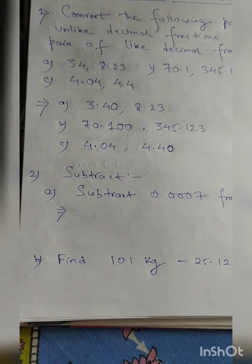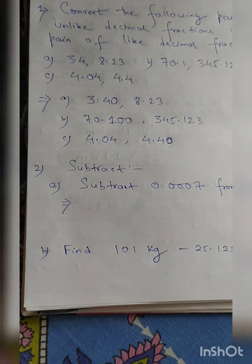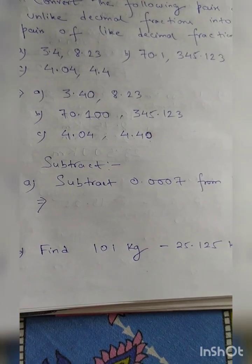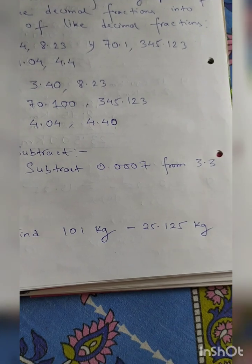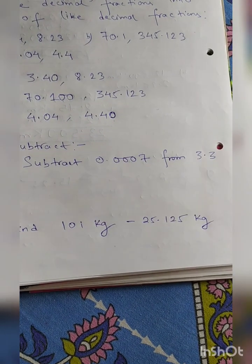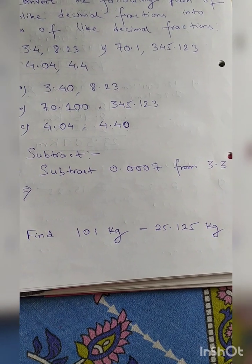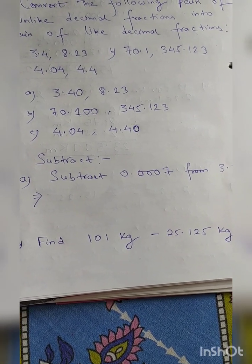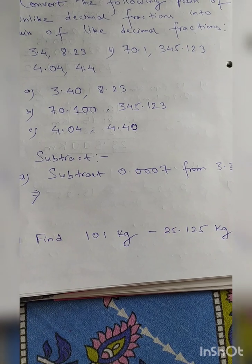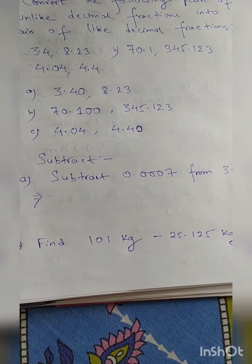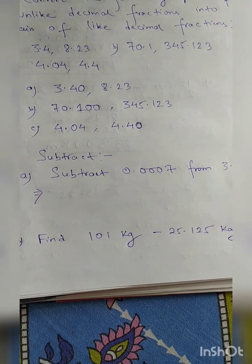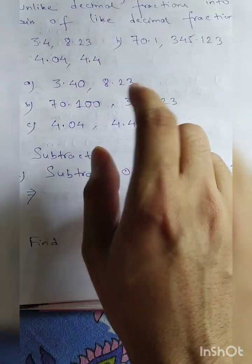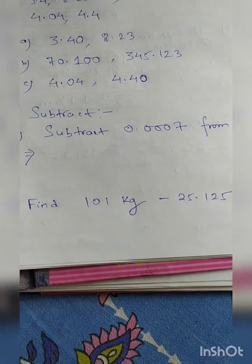Now let's start the subtraction. How to do subtraction — the question is: subtract 0.007 from 3.3. The same way as we have done in addition, here also you do the subtraction, but before that you have to convert. In case of subtraction you have to convert to like — that's why at first we did how to convert unlike to like, because it is required here.